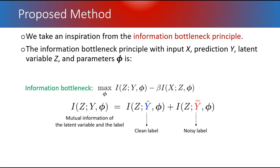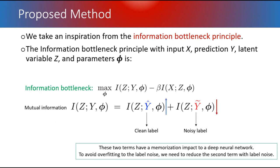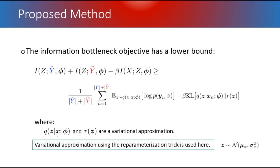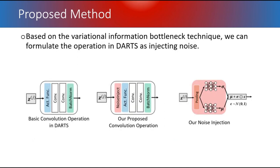Based on our formulation, we have clean labels and noisy labels. For mutual information, we want to increase the mutual information between z and clean labels, and decrease the mutual information between z and noisy labels. Luckily, the information bottleneck objective has a lower bound, and we can formulate that as a variational approximation with cross-entropy and KL divergence with respect to a Gaussian distribution. This is the operator we propose as a replacement to the convolution operation in DARTS, incorporating noise injection as the variational approximation.